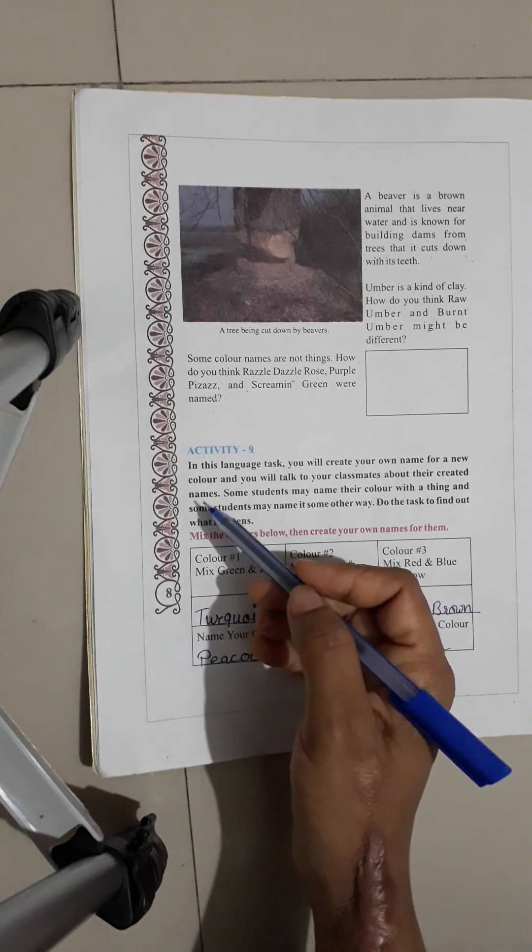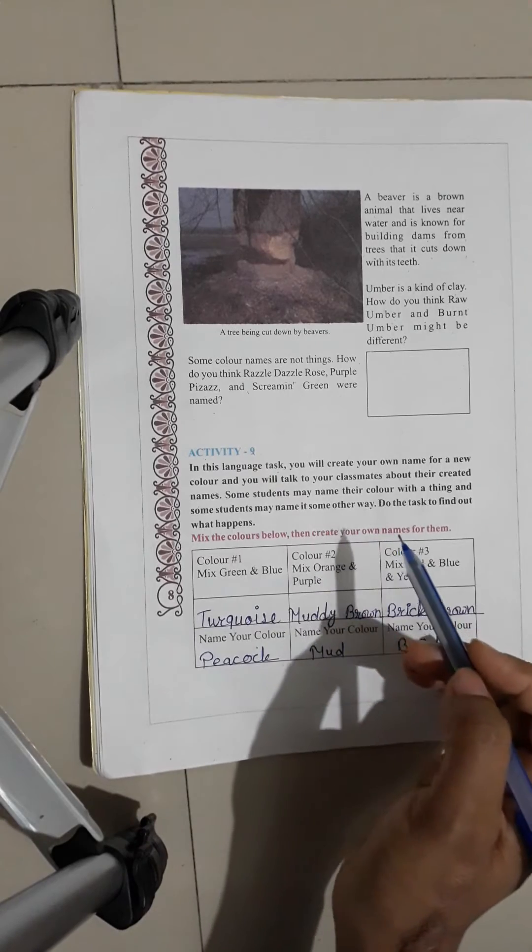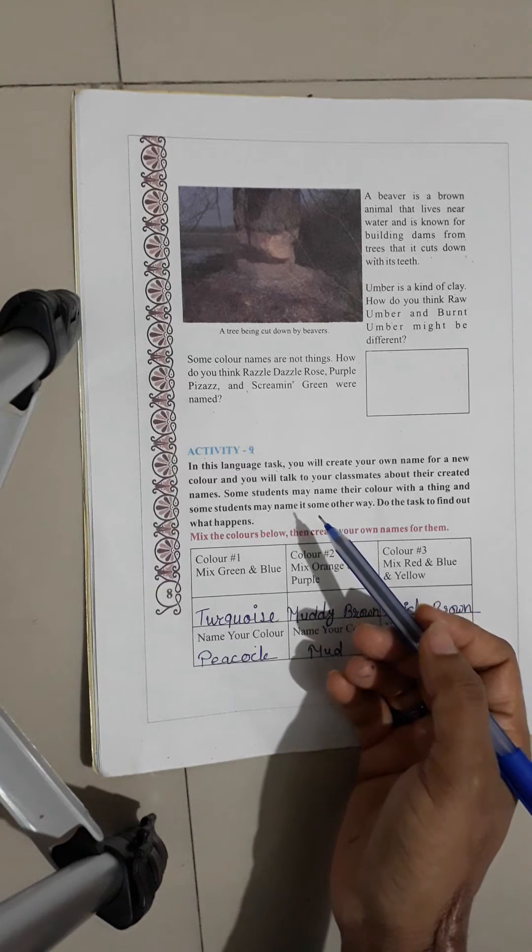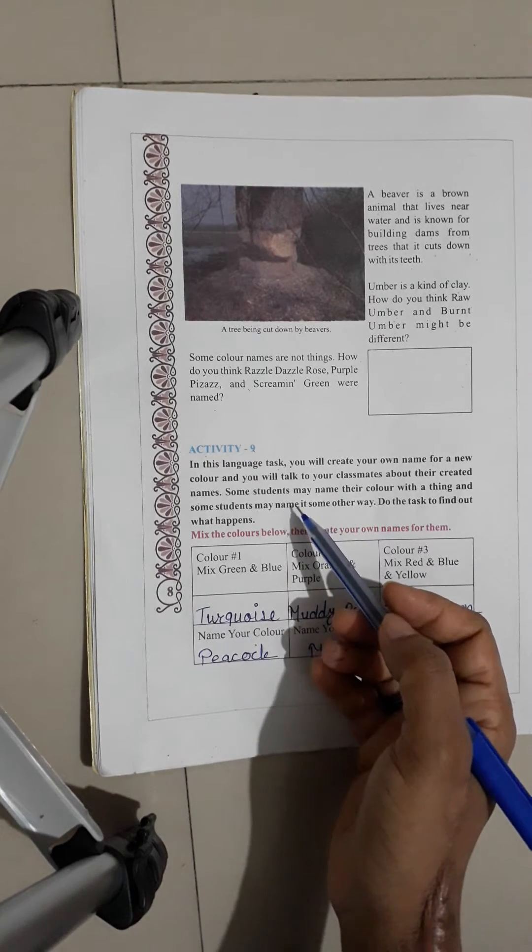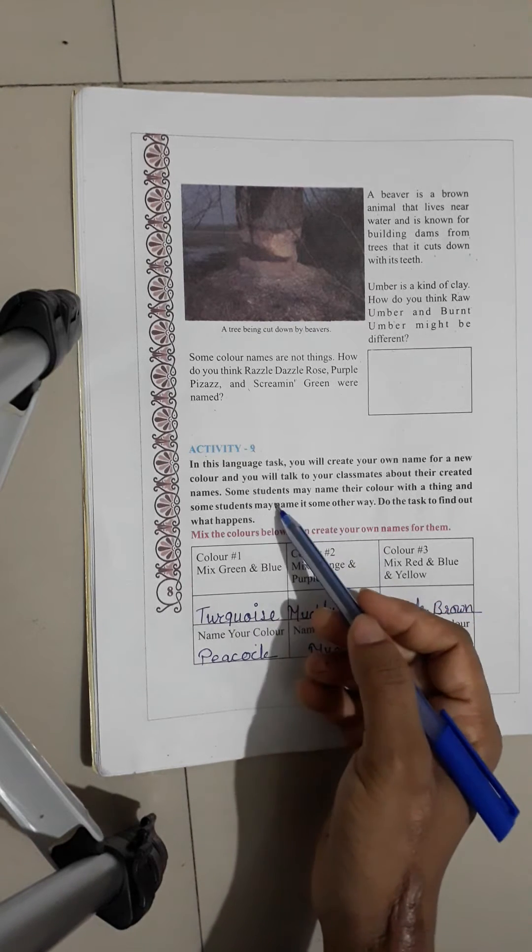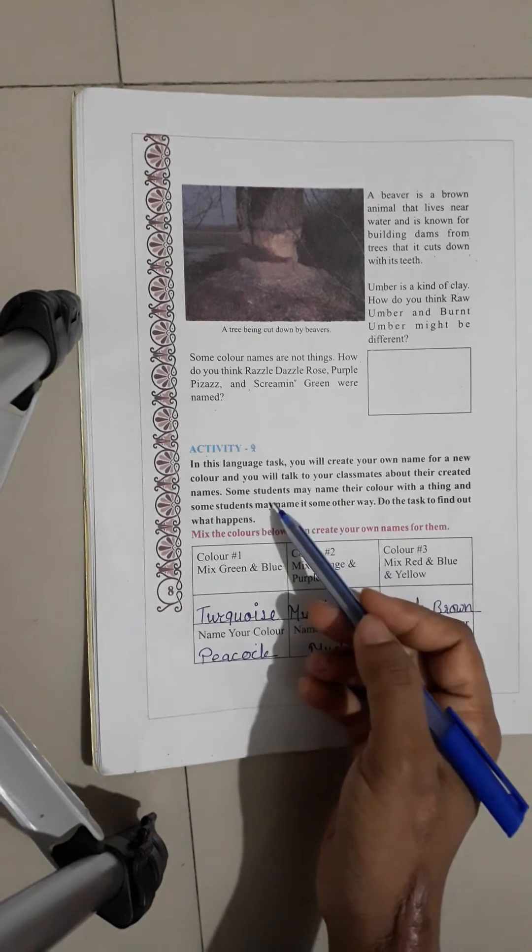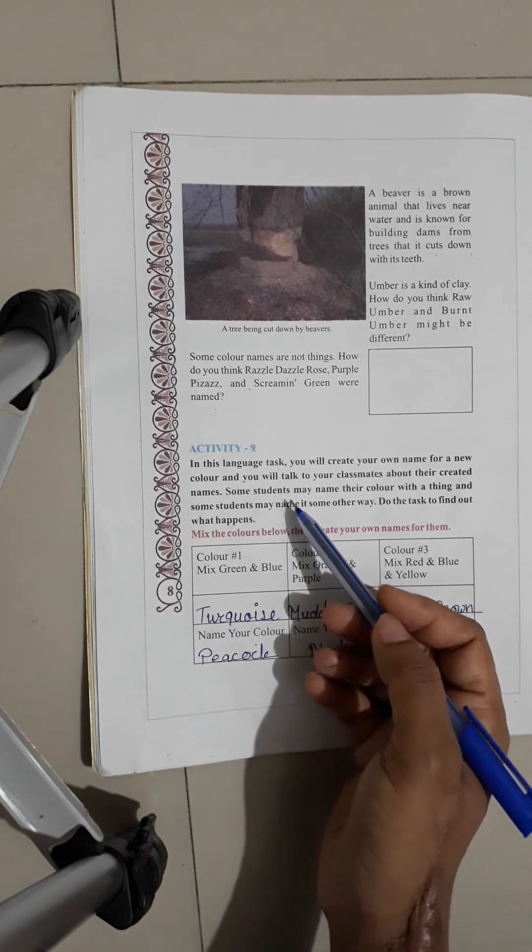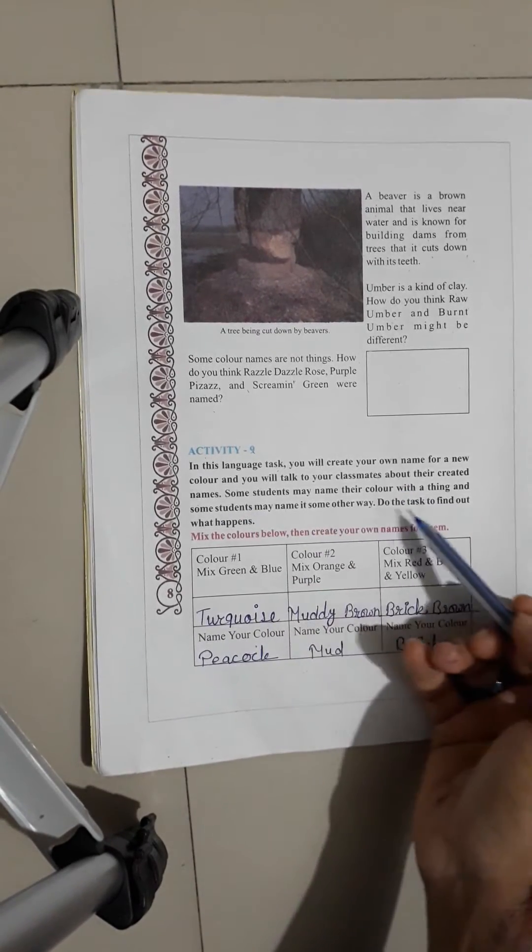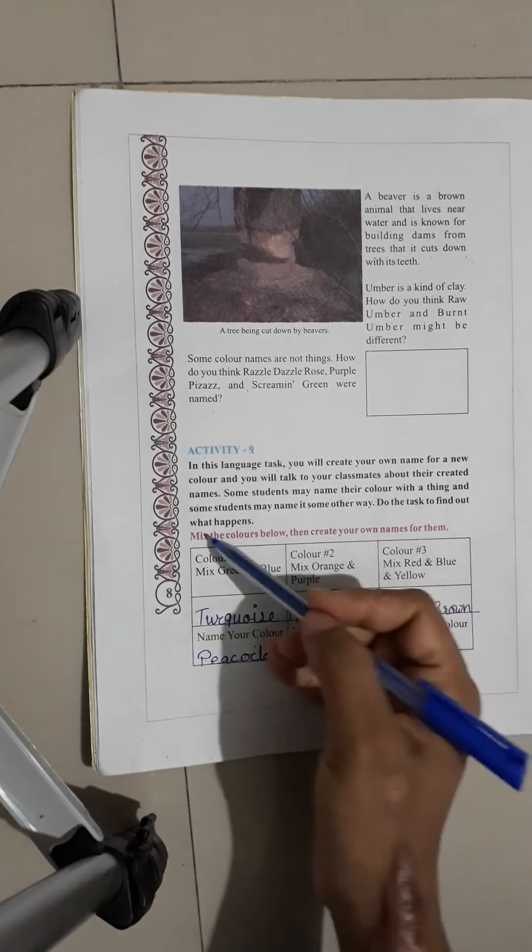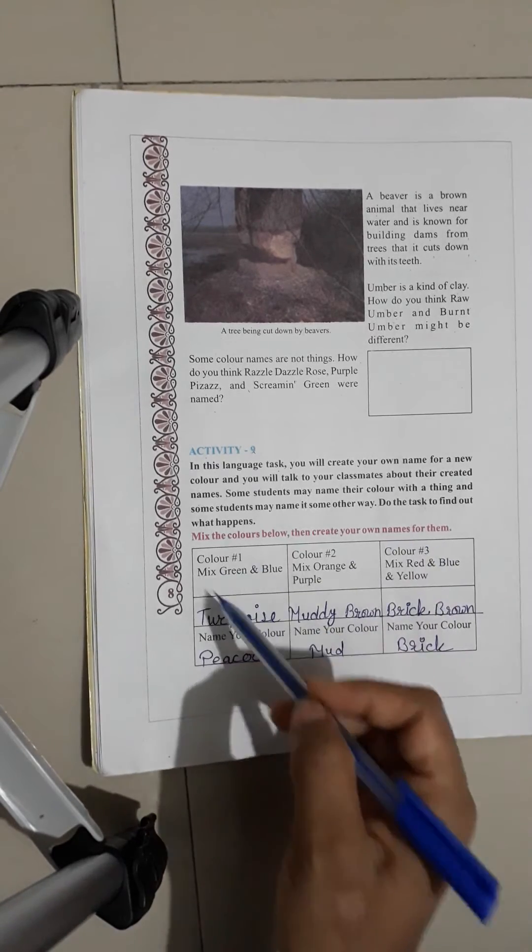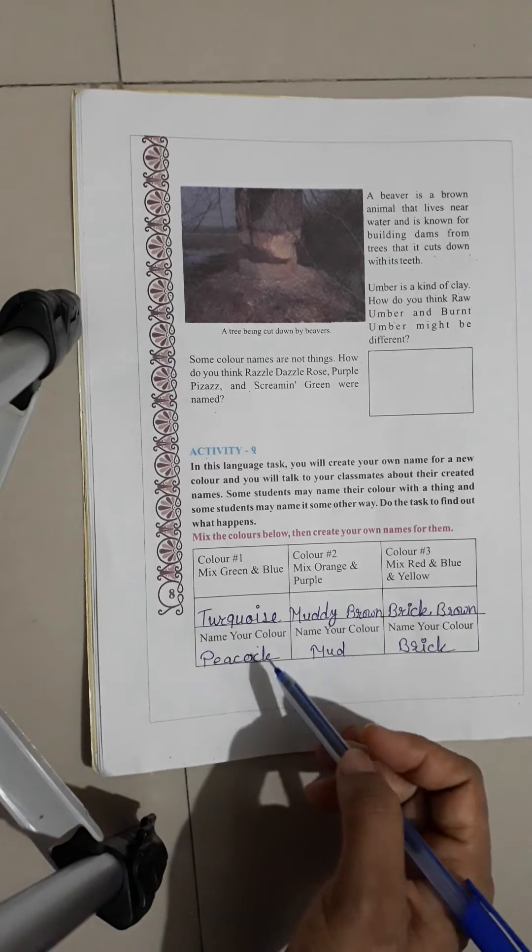Some students may name their colors with a thing. Some students may name it some other way. Do the task to find out what happened. Mix the colors below. Then create your own names for them. Mix the colors and see what it is called.